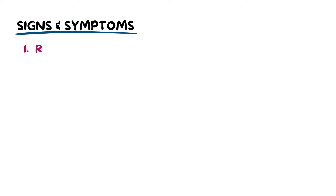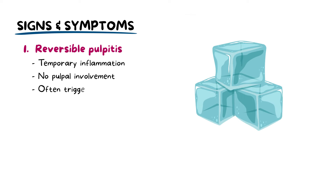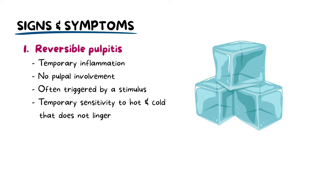You may differentiate the reversible and irreversible forms of pulpitis based on signs, symptoms, and testing. Reversible pulpitis is characterized by temporary inflammation, often triggered by a stimulus — mostly cold but sometimes hot temperatures — causing sensitivity without irreversibly damaging the pulp. The sensitivity is temporary and does not linger.